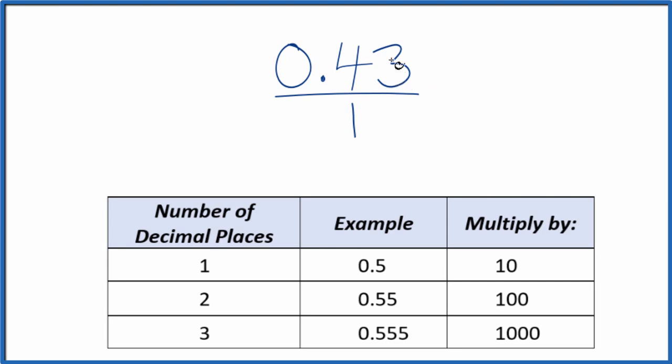In this case, what we need to do is get this 0.43 to be a whole number. And since we have two decimal places, what we can do is multiply by 100. So 100 times 0.43, that equals 43.